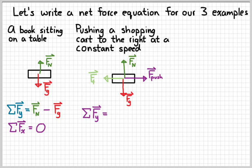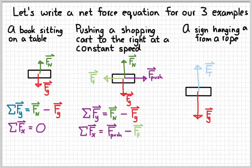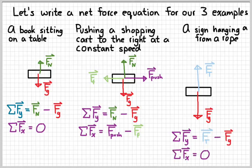Our second example was the shopping cart — pushing it to the right at a constant speed. The net force in the Y direction would look very similar: normal force minus gravity. The net force in the X direction, right minus left, would be the force of the push minus the force of friction. Our third example is the sign hanging from a rope: tension going up and gravity going down. The net force in the Y direction is tension minus weight, and there are no X forces, so the net force in the X direction is zero.